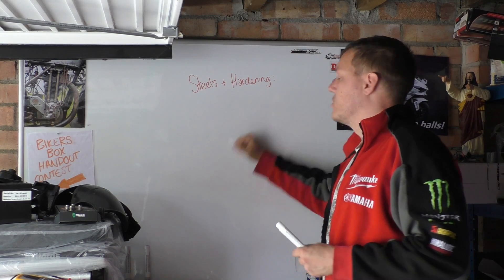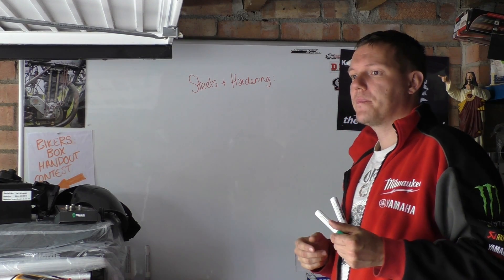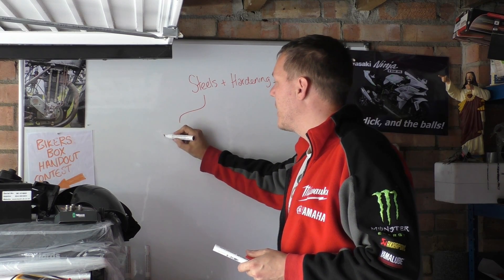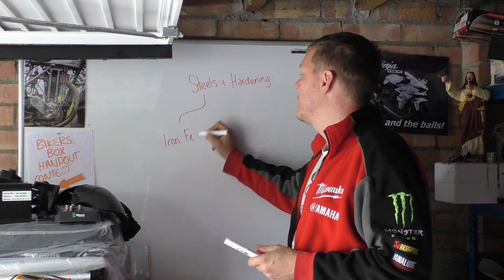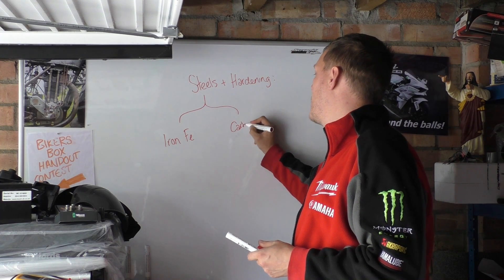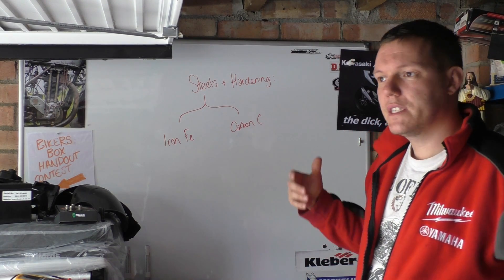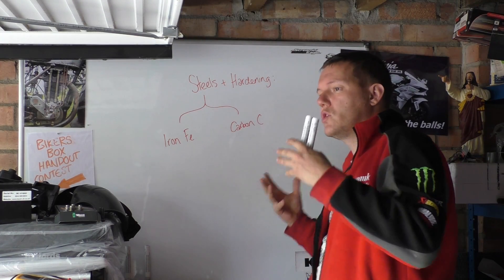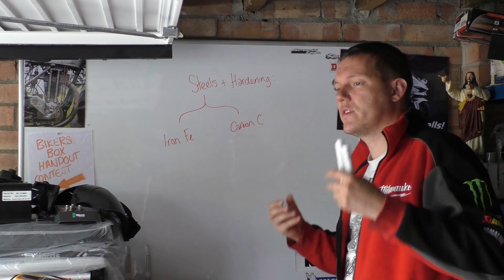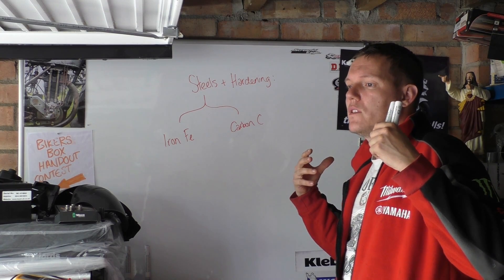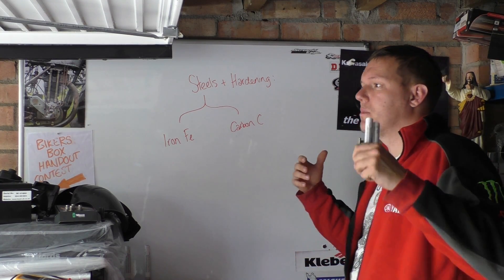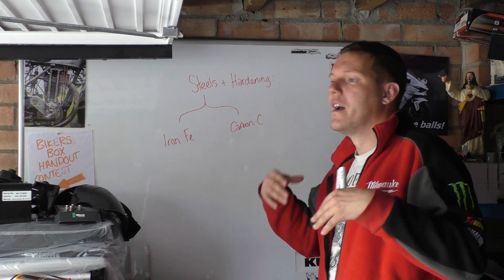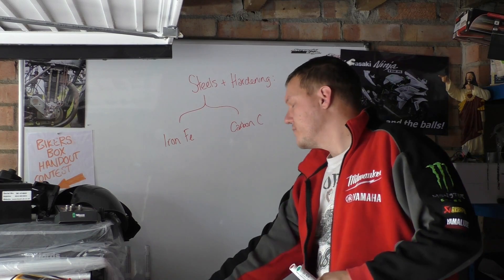Steel is an alloy — generally an alloy between iron (Fe) and carbon (C). The different types of steels give you different properties. Sometimes you want toughness, sometimes hardness, sometimes good fatigue or anti-fatigue properties, sometimes good tensile strength, sometimes good compressive strength, sometimes you want it to be malleable to a degree.